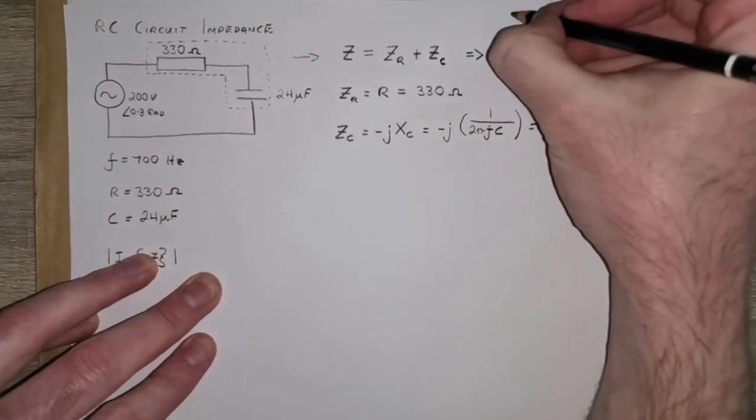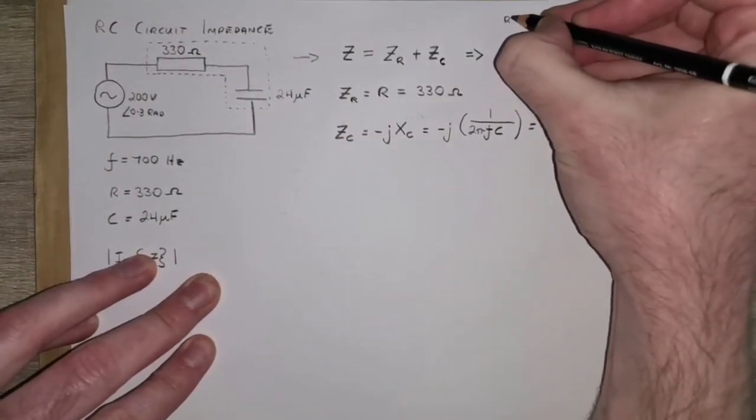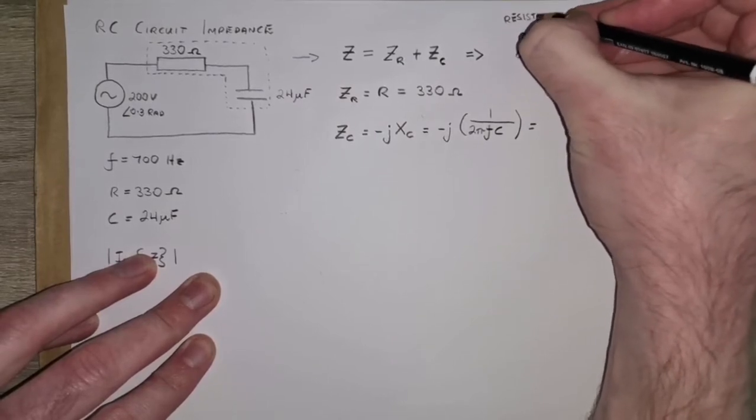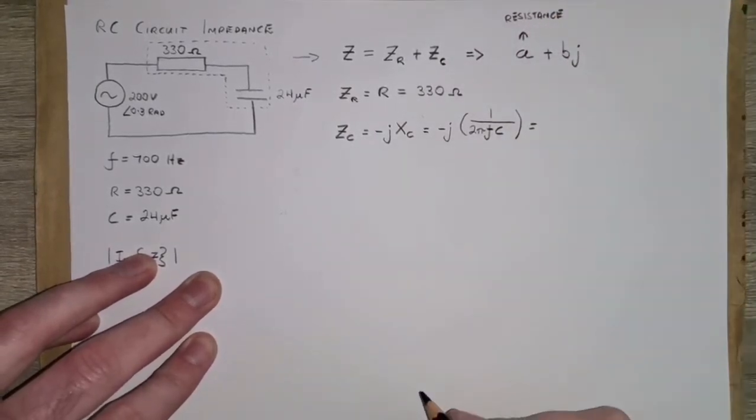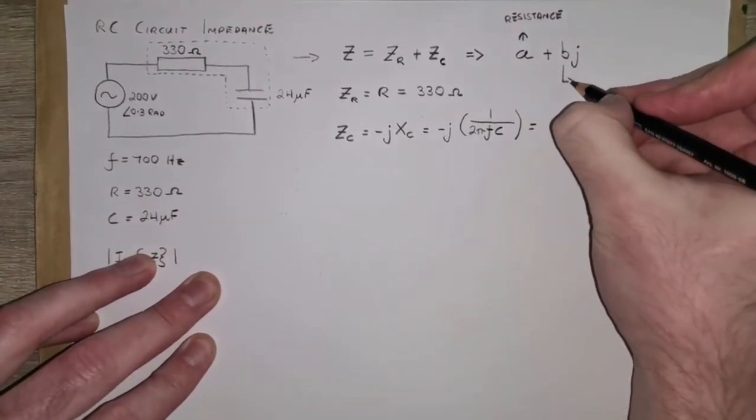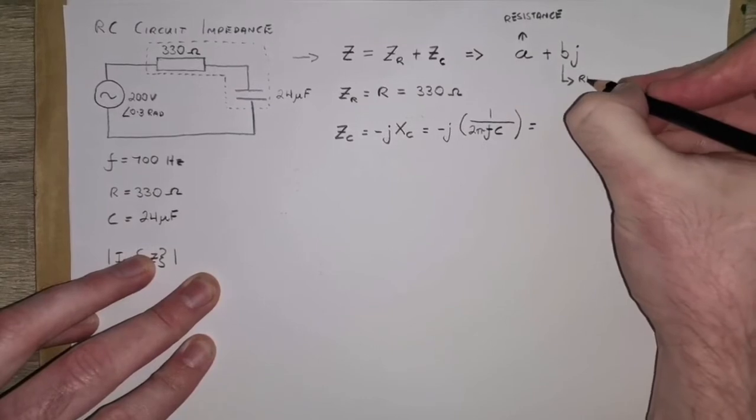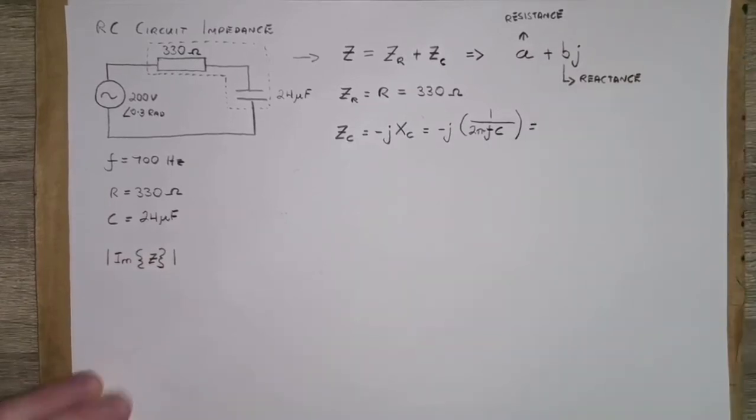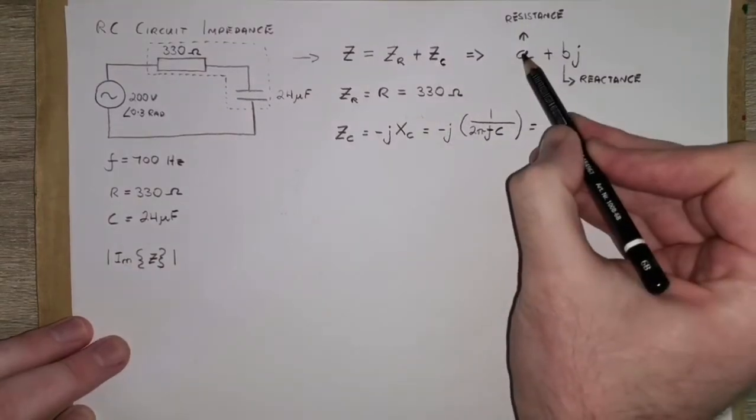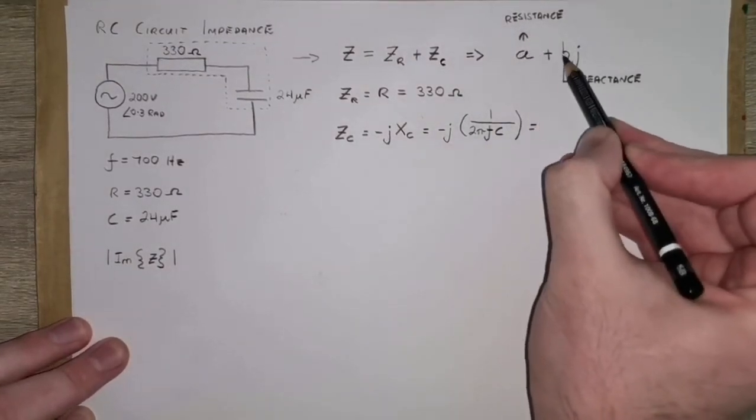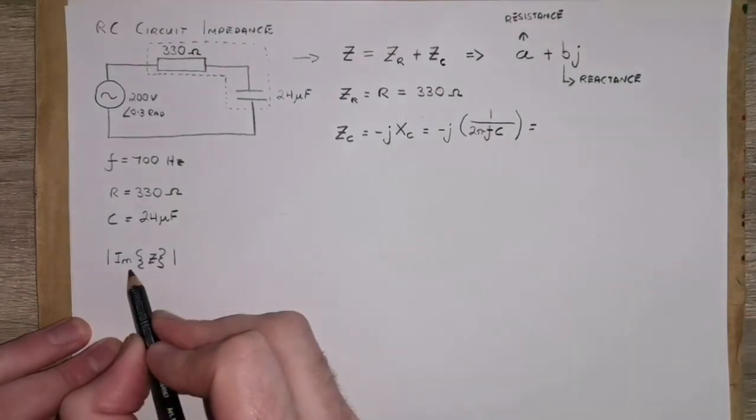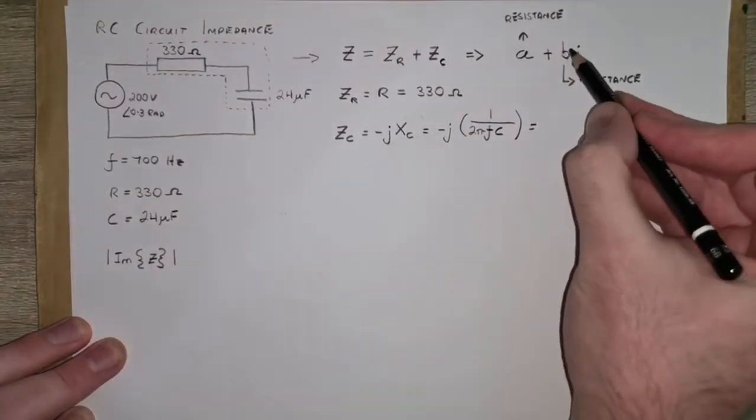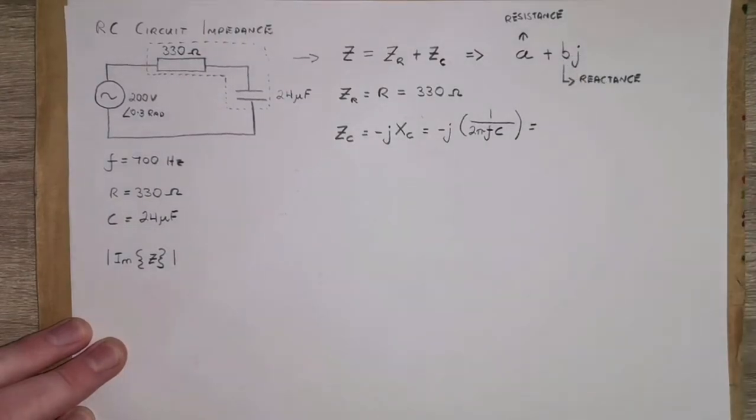And when it's presented in this form in impedance, this part here represents the in-phase component, or the resistance of the circuit. And this value here is going to represent the reactance of the circuit. So if you look at it here, this is the real part, which is the resistance, and this is the imaginary part, which is the reactance. So what this question is actually looking for us to work out here is this reactive part here. So let's do that.